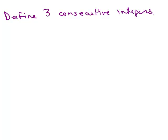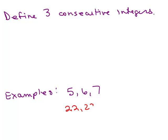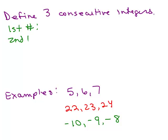What if you were asked to define three consecutive integers? Let's think of some examples first. So examples might be 5, 6, and 7. Or how about 22, 23, and 24? Or with negative numbers: negative 10, negative 9, and negative 8. So if I were going to define three consecutive integers, the first number is n, the second is n plus 1, and to get the third number you add 1 again, so it's n plus 2.